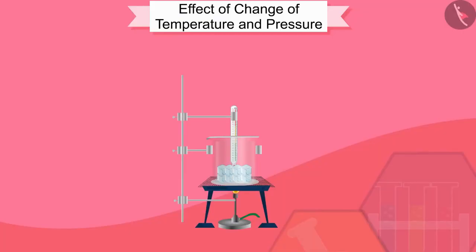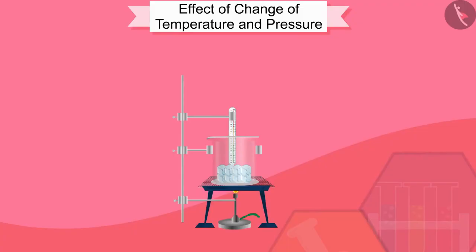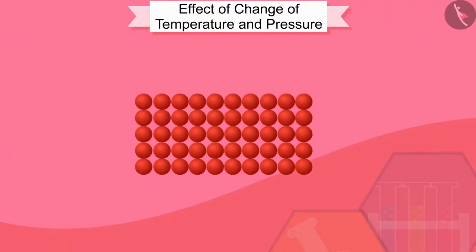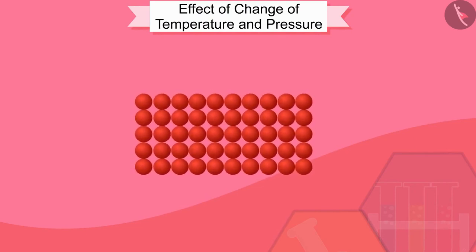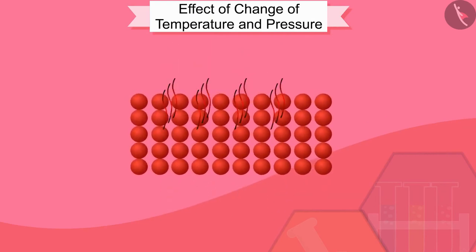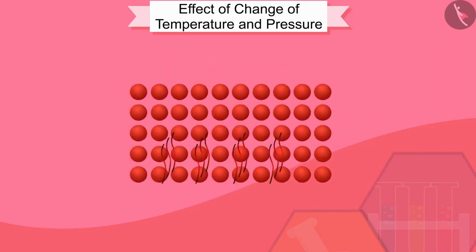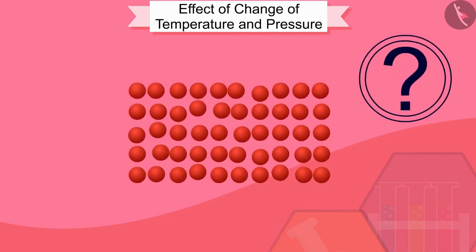Let us first discuss observations in the conversion from ice to water. We will see when and why ice changes to water. When we start heating ice, the kinetic energy of particles present in ice increases as the temperature increases. As the kinetic energy increases, the particles vibrate more quickly. The energy supplied by heat overcomes the forces of attraction between the particles. The particles leave their fixed positions and start moving more freely, until ice melts and becomes water, a liquid.